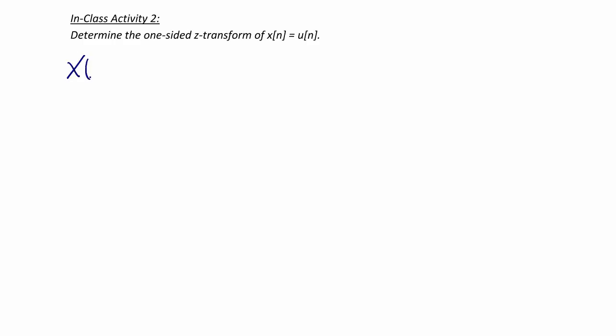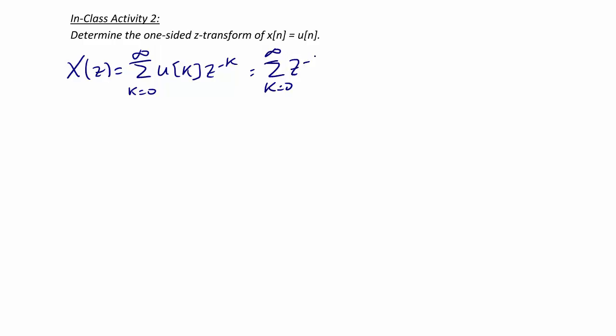In class activity two, determine the one-sided Z-transform of x of n equals u of n. So X of z equals the summation from k equals 0 to infinity of u of k times z to the negative k. We know that the step function is 1 between 0 and infinity, so we can write this as the summation from k equals 0 to infinity of z to the negative k.